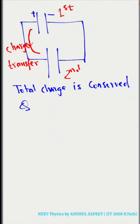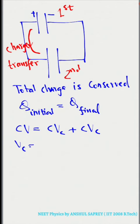Since total charge is conserved, Q initial is equal to Q final. C into V is equal to C into VC plus C into VC, where VC is the common potential and V is the initial potential of the first capacitor.